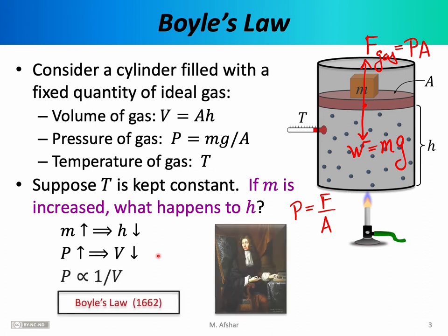Through a series of experiments, Robert Boyle essentially proved that pressure is proportional to one over the volume. This proportionality means that pressure is equal to one over V times some unknown quantity. Boyle was not able to figure out what that unknown quantity is. However, through his meticulous experiments, he was able to prove that pressure and volume are inversely proportional. This important relationship came to be known as Boyle's Law, which was formulated in 1662.